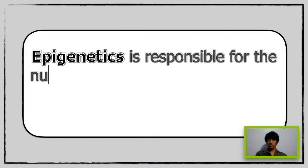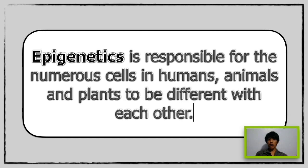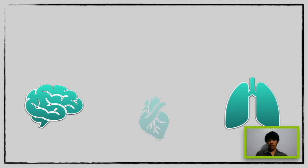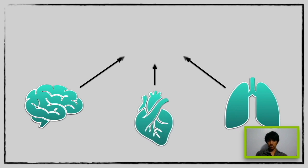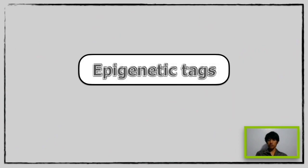Put it simply, epigenetics is responsible for the numerous body cells in humans, animals, and plants to be different with each other. Brains, lungs, and the heart are all made up of the same body cells, but proteins in each of these cells turn on and off to specify the unique functions of the organ. Call these on and off switches as epigenetic marks.